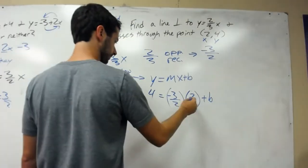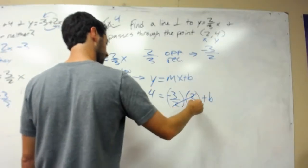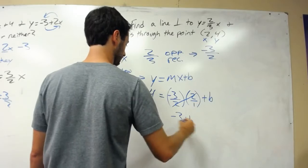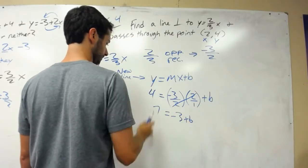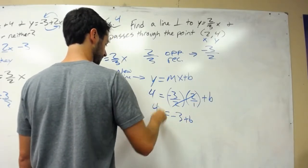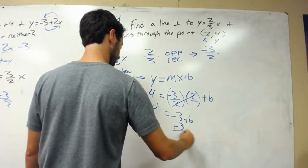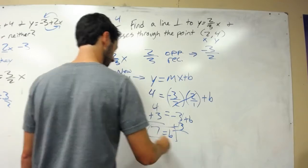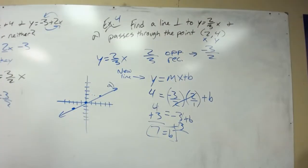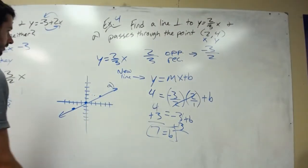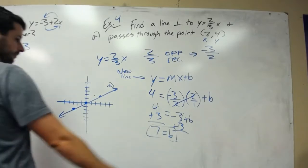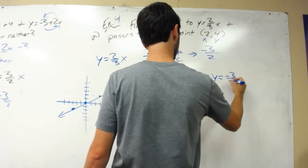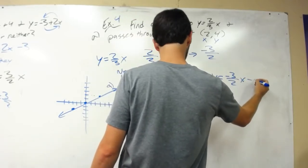Then we can simplify. 2 times negative 3 over 2, the 2's cross out when that's over 1. You're left with negative 3 plus b equals 4. Add the 3 to both sides and get 7 equals b. So our line would be y equals negative 3 halves x plus 7.